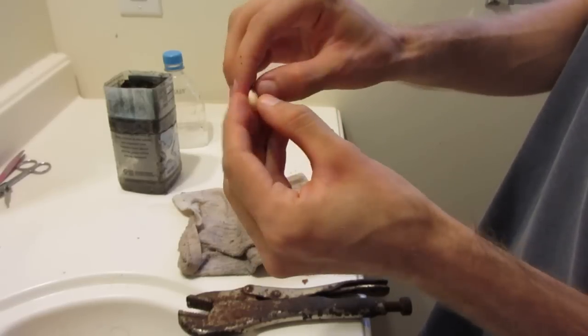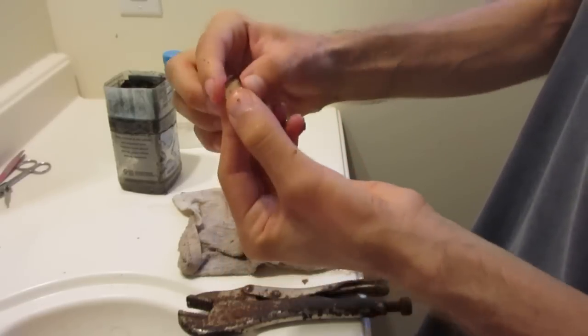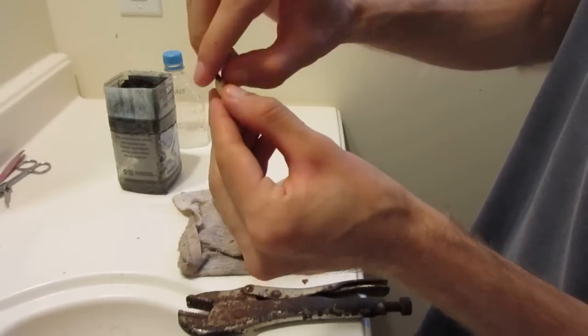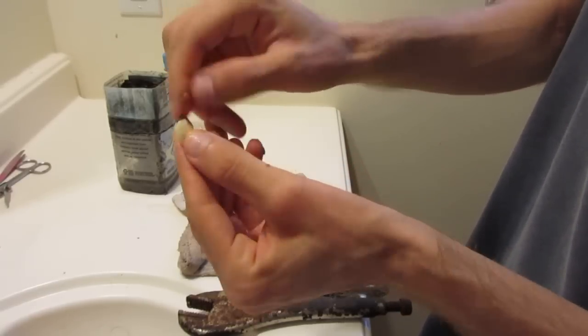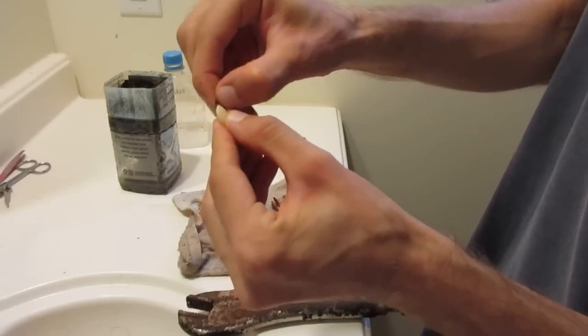You've got to be real careful here at the bottom. See that's where the seed is, is the pointed tip. Or not the seed, the root tip. That's where the root is going to come out, is the pointy end.